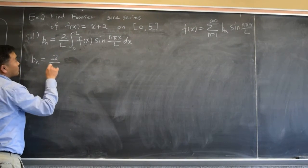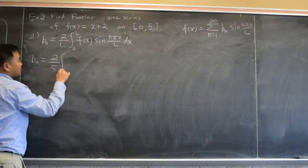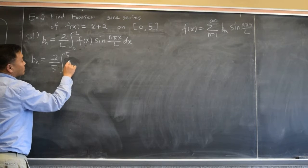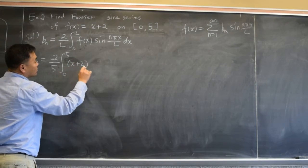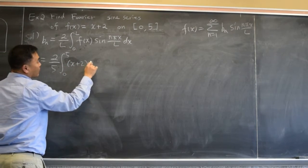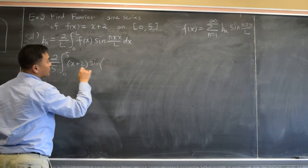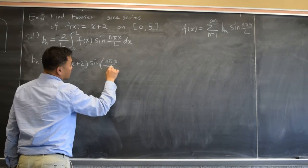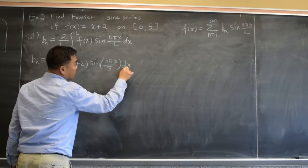All right, l is 5 in this context. And then f of x is x plus 2, sine of n pi x over 5. Yes, that's what we have to do.